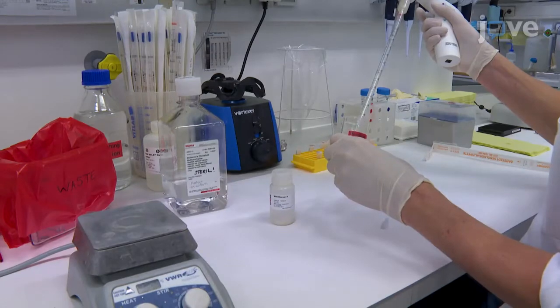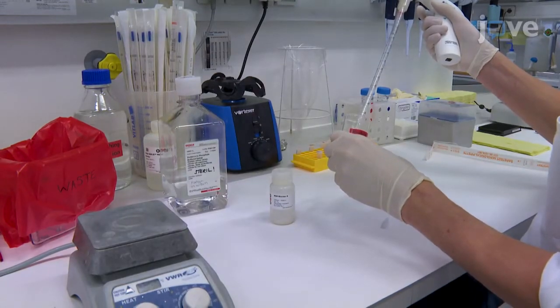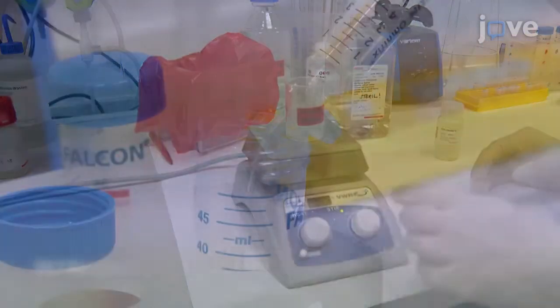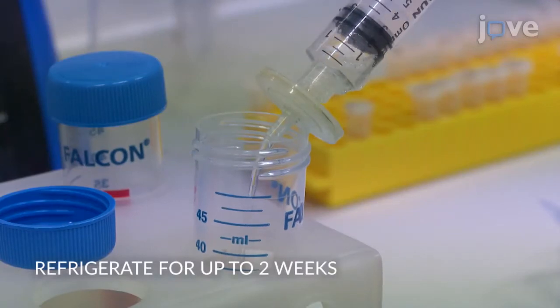Prepare a blocking solution of 3% blocker A in PBS and stir gently. Sterilize the blocking solution by filtration.